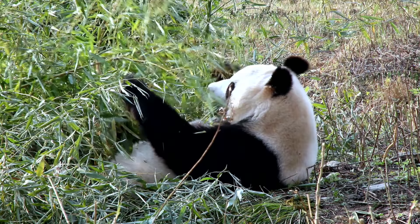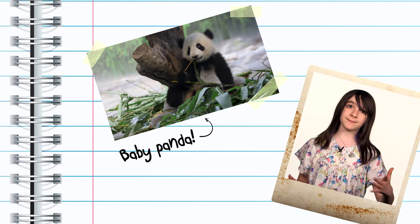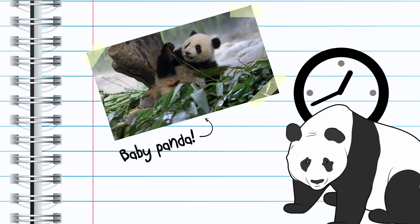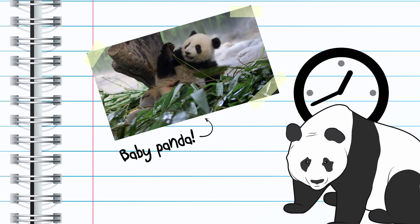However, bamboo shoots lack the calcium required for creating panda babies. So when the females get pregnant in the spring, they're actually able to pause their pregnancy until the midsummer, when the bamboo leaves with lots of calcium start to sprout.